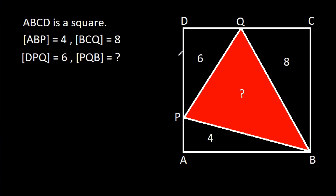In this video, we have been given that ABCD is a square, and area of ABP is 4, area of BCQ is 8, area of DPQ is 6. Then we have to find area of PQB.